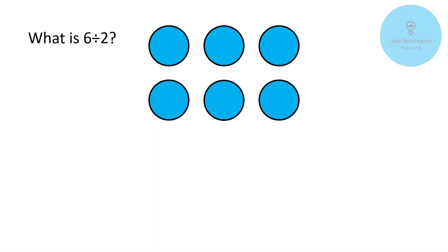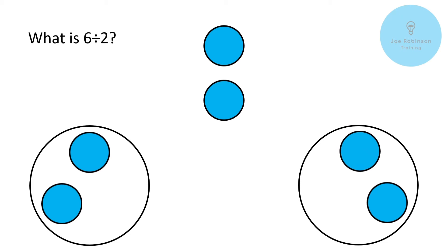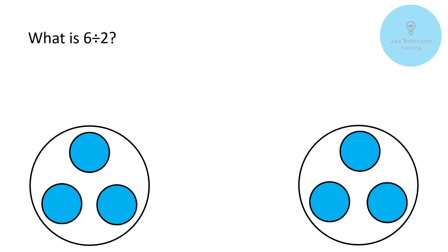To understand how the process in this video works, we need to think first about normal division. Here we've got a simple sum: what is 6 divided by 2? The first way we can think about division is having a number of objects that we're dividing between a number of people. So here we've got six pizzas on the screen and we're thinking about dividing that between two people. We start pairing them off — one pizza to one person, one to the other — and each person has ended up with three pizzas.